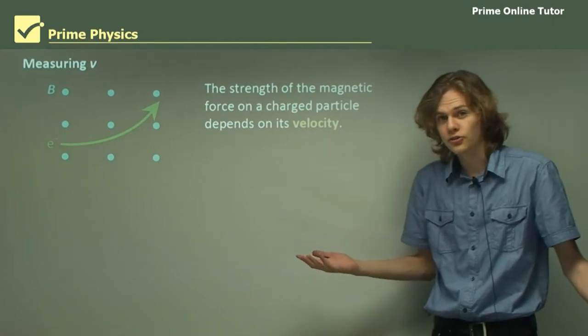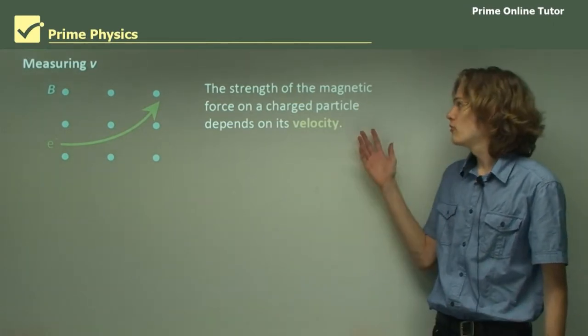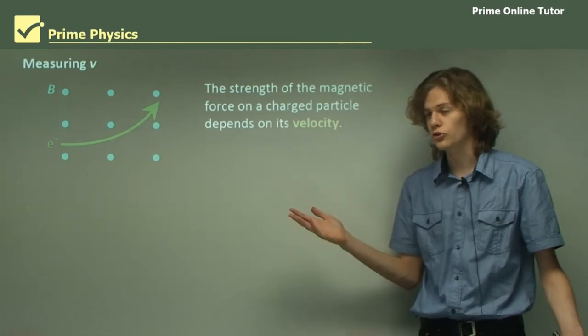So, how do we find the velocity? Well, the strength of the magnetic force in a charged particle depends on its velocity. We know this already.